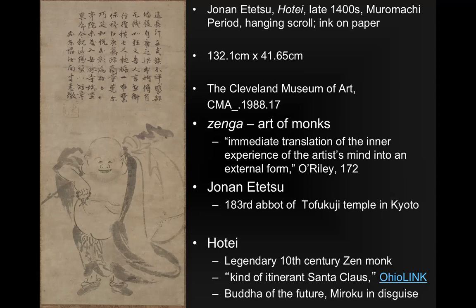It's kind of a meditative type of style. Jonan Itetsu was the 183rd abbot of the Tofukuji Temple in Kyoto, and you'll find that a lot of these artists tend to be prominent in other ways. Who's being pictured is Hotei, who has many names, from Mahayana Buddhism — a legendary 10th-century Zen monk, kind of an itinerant Santa Claus. He's a Buddha of the future.